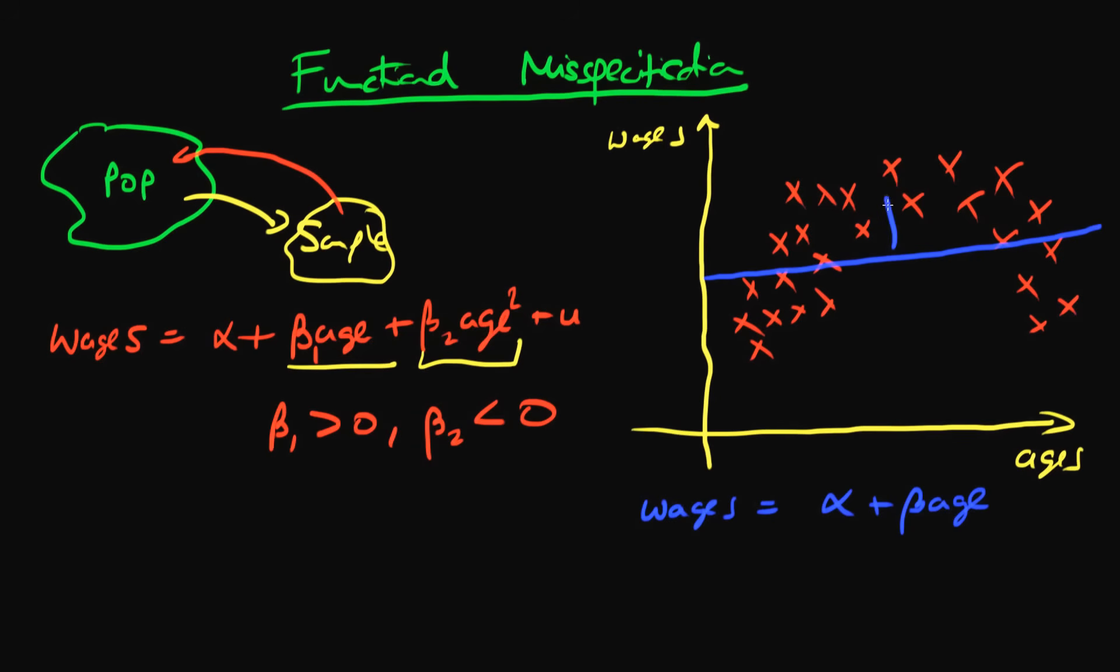And perhaps from this we get out an estimate of beta and perhaps it's ten dollars. So this suggests that our return to an extra year of age is ten dollars per week.